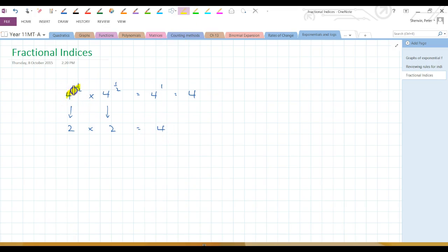So is that not 2 times 2 equals 4? So in that case, this value here and this value here must be the same, in which case 4 to the power of a half, which is obviously equal to 2 which we've just worked out, must be the square root of 4.